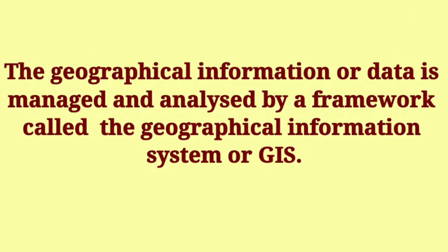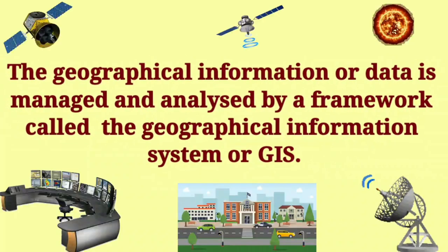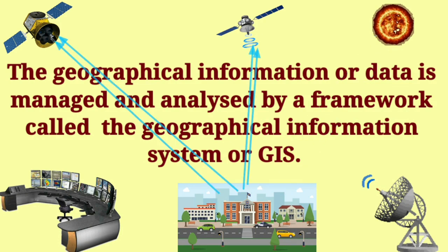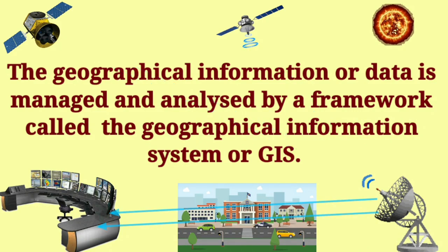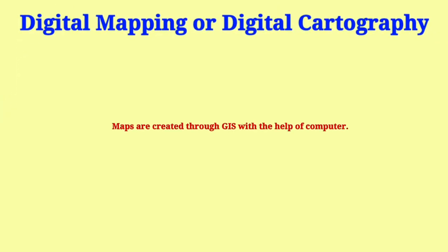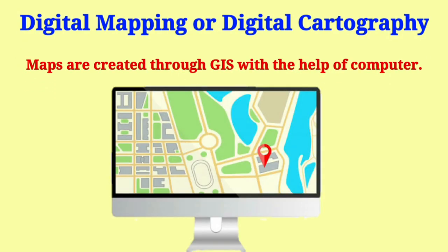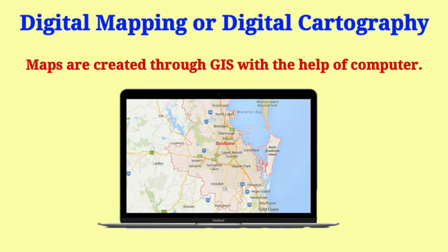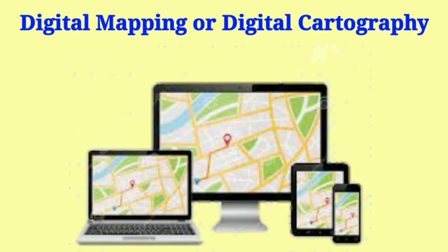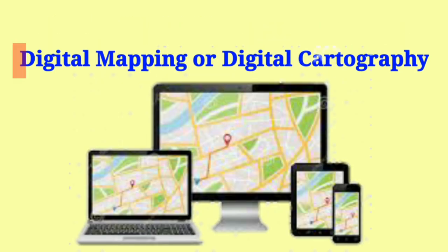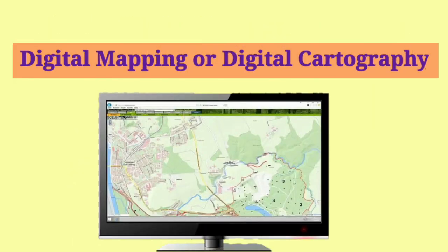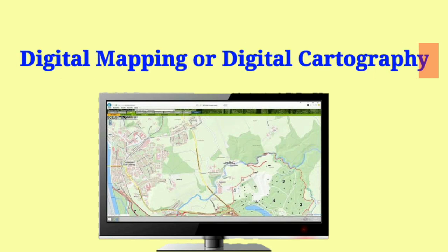Geographical information or data is managed and analyzed by a framework called the Geographical Information System, or GIS. Nowadays, maps are created through GIS with the help of computers. This is called digital mapping or digital cartography.